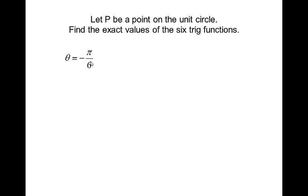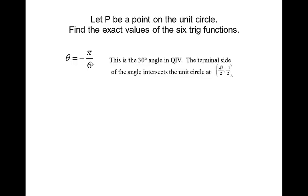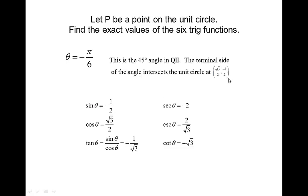Here's another one: negative pi over six. We want to see where the terminal side of the angle intersects the unit circle. This is the 30-degree angle down in quadrant four. The terminal side intersects at square root of three over two, negative one half. So the cosine is square root of three over two and the sine is negative one half. Then you have your reciprocals. Tangent is negative one over square root of three because you divide sine by cosine.